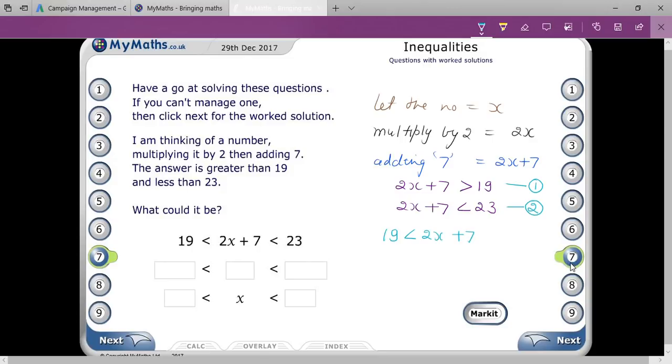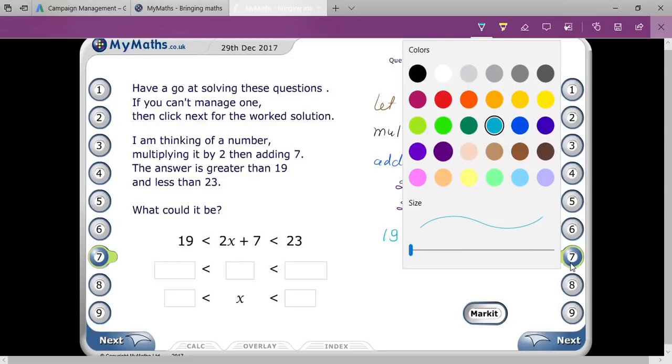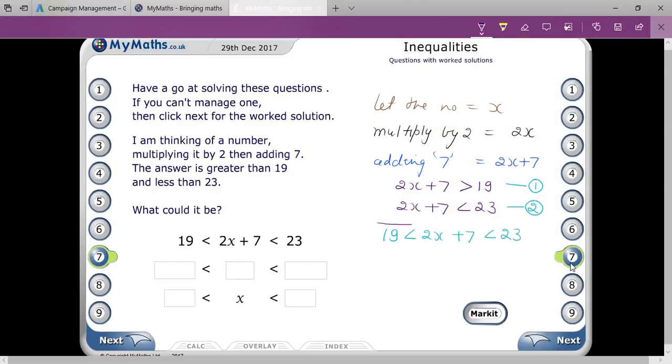And then 2X + 7 < 23. Do you understand this one? So here I explained to you how you will combine two inequalities together. Now the main thing is how you would like to solve that.